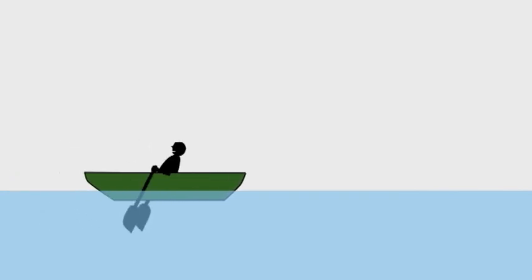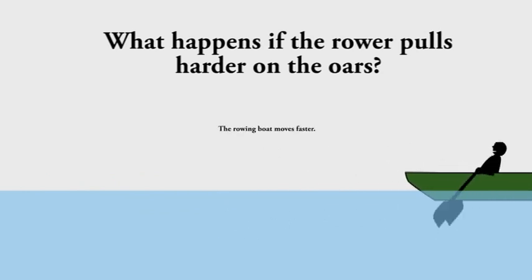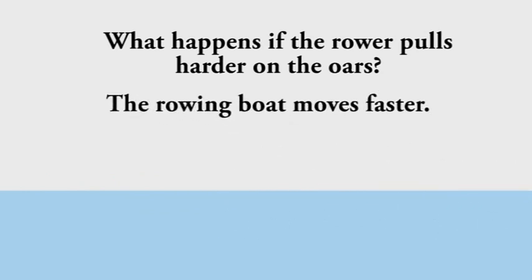The person in the rowing boat makes it move by pulling on the oars. What happens if the person pulls harder on the oars? The rowing boat moves faster.